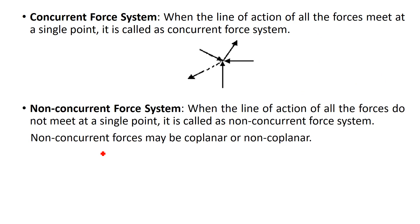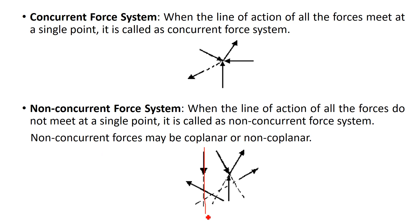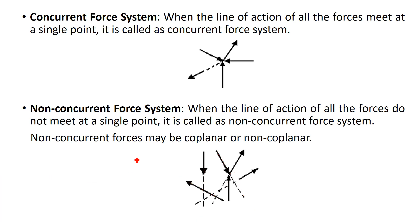Opposite to that, if the line of action of all forces does not meet at a single point, it is called a non-concurrent force system. Forces act at different points and their lines of action never meet at a single point. Such a force system is called a non-concurrent force system.